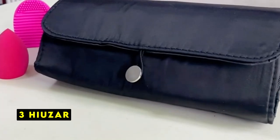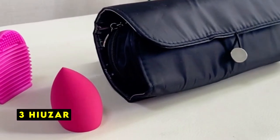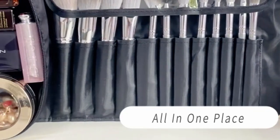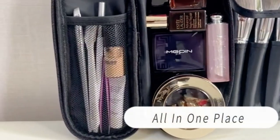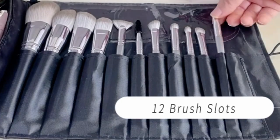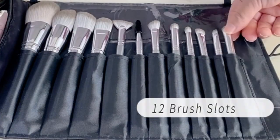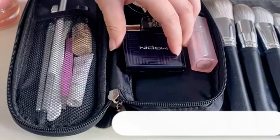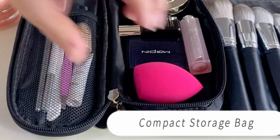On number 3 is Hiuser. The Hiuser roll-up makeup brush case is a compact and practical way to store and organize your beauty essentials. With its 12 pockets and a compact storage bag, it can accommodate up to 20-plus cosmetic brushes of different sizes, making it ideal for travel and business trips.